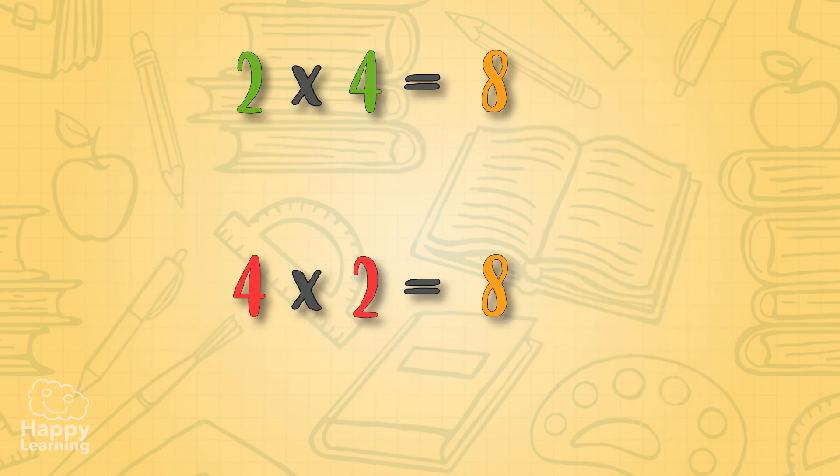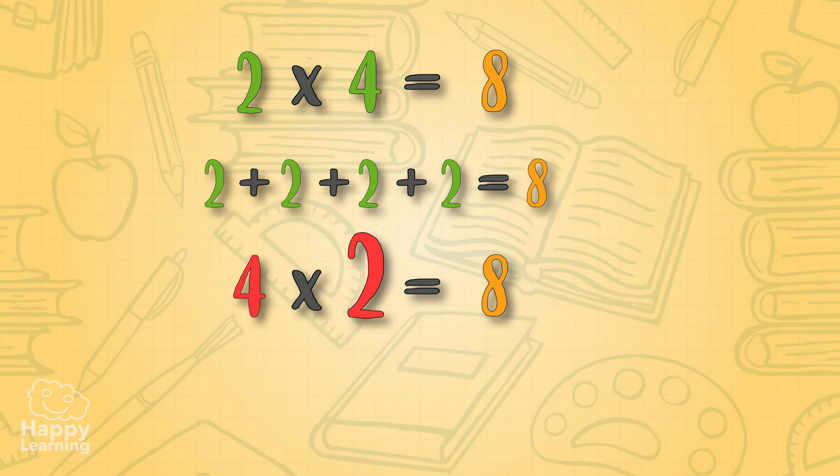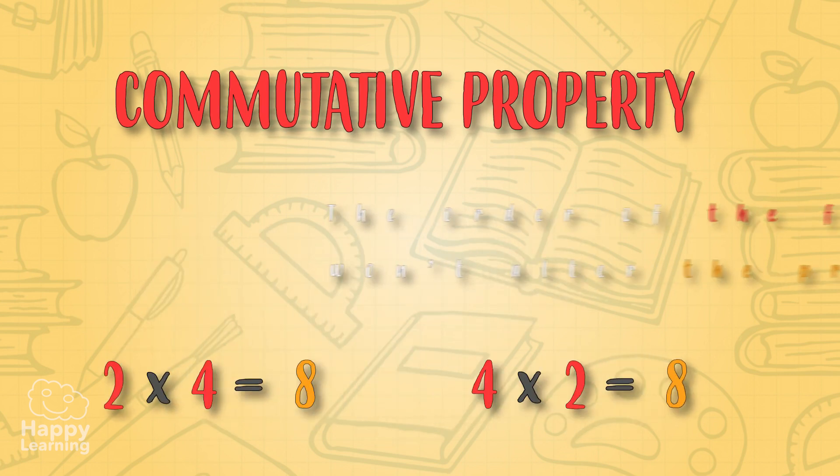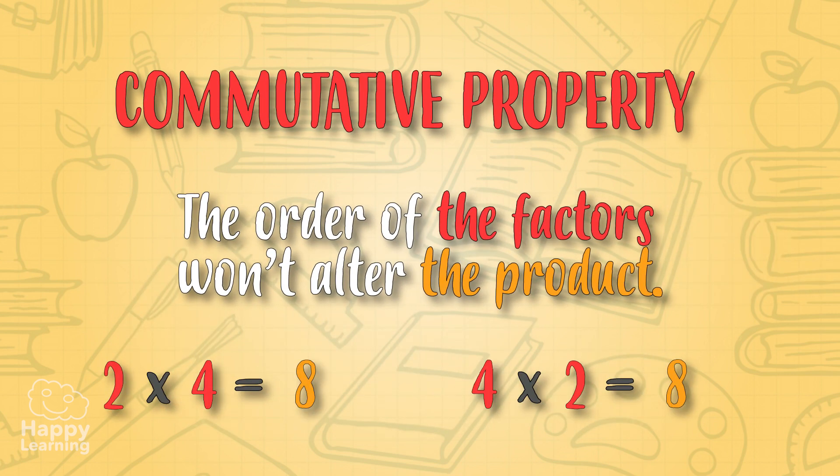We already know that two times four is adding four times number two, and the answer is eight. Now let's see four times two. We need to add number four twice: four plus four is eight, same as when we multiply two times four. This is the commutative property. It says the order of the factors won't alter the product.